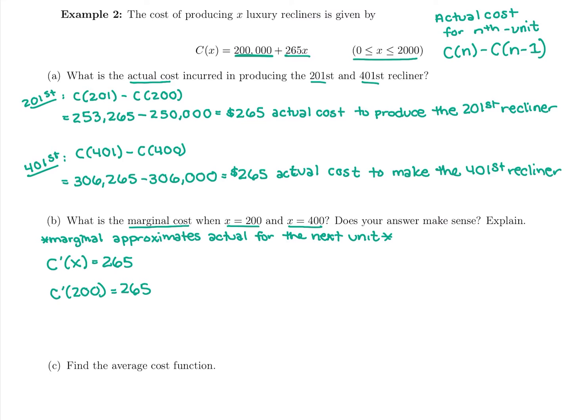We want to remember marginal approximates actual for the next unit. So this $265 means the approximate actual cost to produce just the 201st, remember next unit, 200 approximate C 201st, the approximate actual cost to produce just the 201st recliner is in our output as money $265.